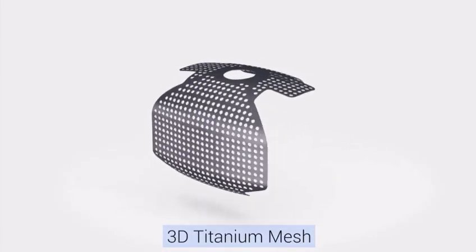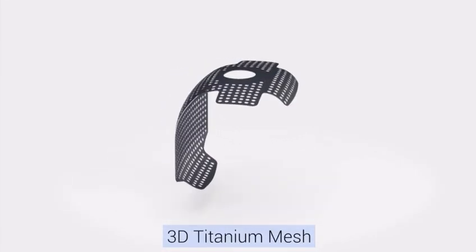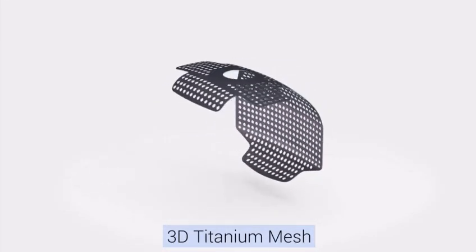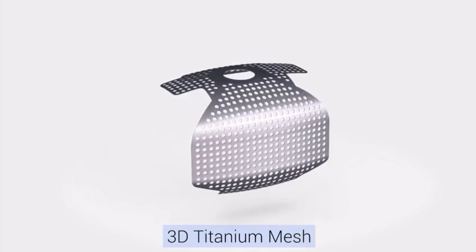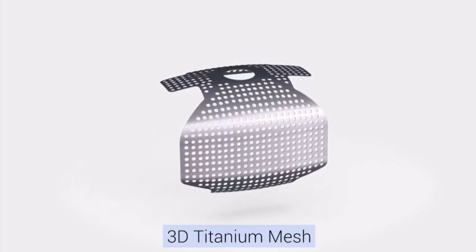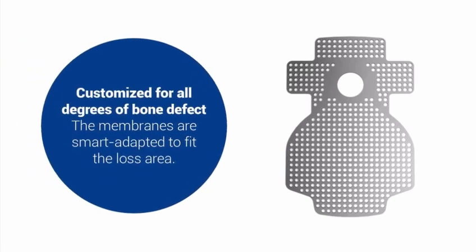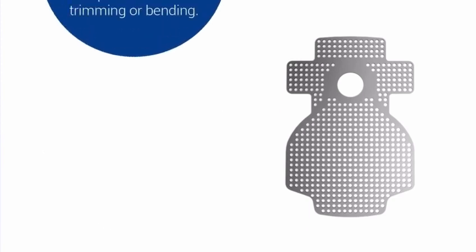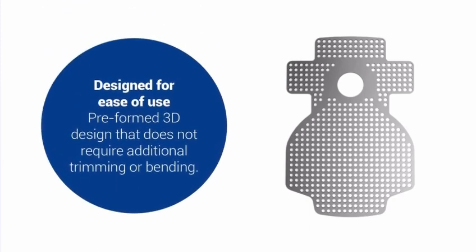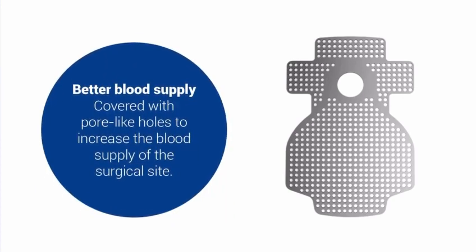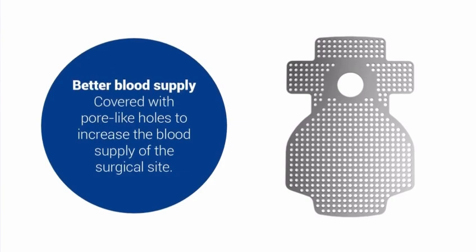3D Mesh is a non-absorbable titanium membrane used to regenerate periodontal tissue. It promotes bone formation in areas where a natural bone defect has occurred. Customized for all degrees of bone defect and smart-adapted to fit the bone loss area, this product can be used without requiring any additional trimming or bending, making it incredibly user-friendly. The whole titanium mesh is punctured with pore-like holes to increase blood supply to the surgical site.